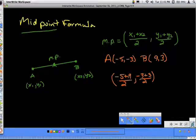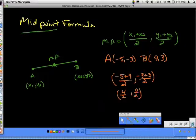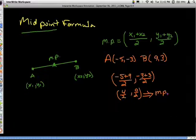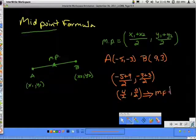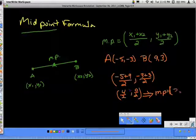Negative five plus nine is four, divided by two. Negative three plus three is zero, divided by two. So when we simplify this, it's basically going to tell us our midpoint. Four divided by two is two. Zero divided by two is zero. So the midpoint would be at two, zero.